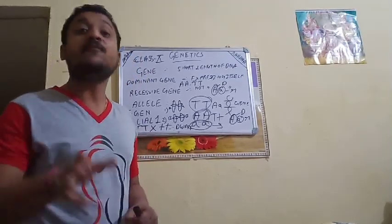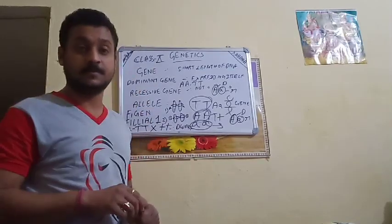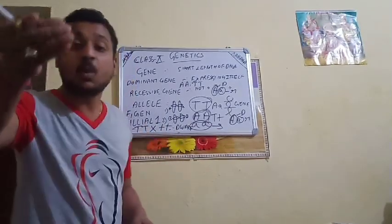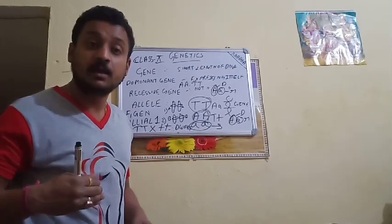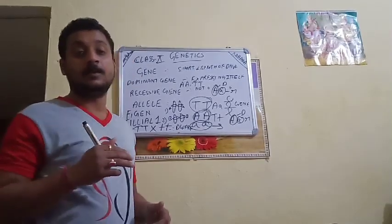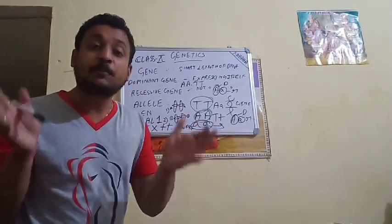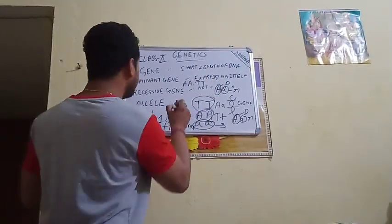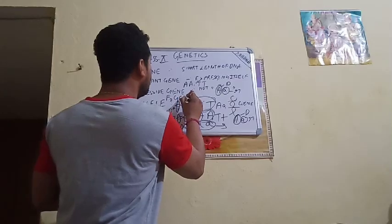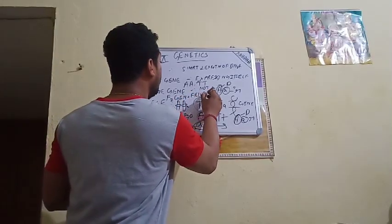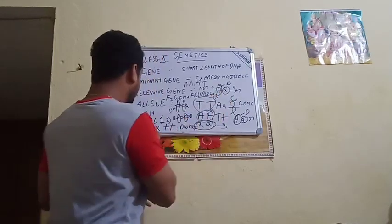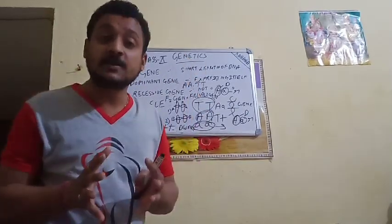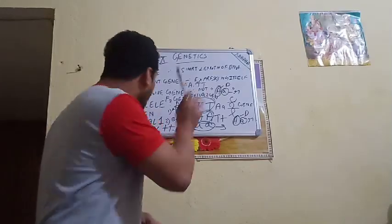When we talk about F2 generation — Filial 2 generation — two parents were crossed and the progenies, that is the offspring, are obtained from the F1 generation. The cross between the progenies of the F1 generation is the F2 generation. So Filial 1 generation means the cross between two parents, and Filial 2 generation means the cross between the progenies obtained from Filial 1 generation.